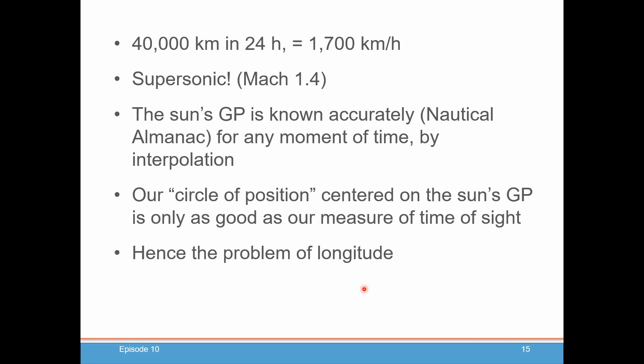Knowing the Sun's GP is going to be critical — we need to know the exact moment of time we take our sight. The Sun's GP is known accurately using the Nautical Almanac for any moment of time, even with interpolation. And our circle of position centered on that Sun GP will only be as good as the accuracy of our measurement of the time we take our sight of the Sun. Hence, we have this problem of longitude.